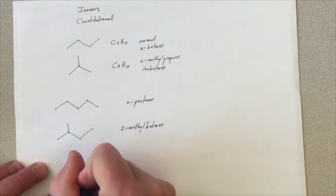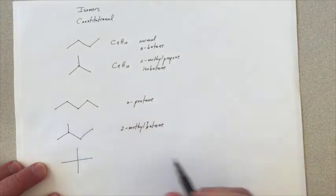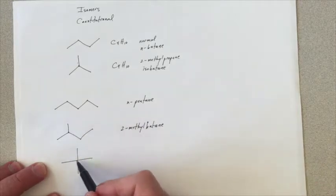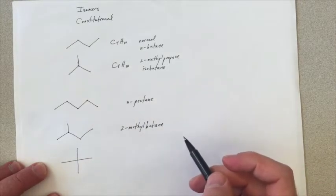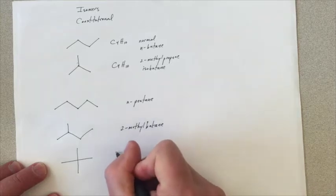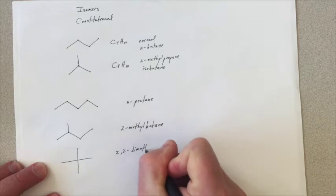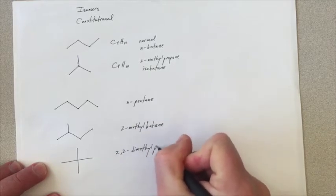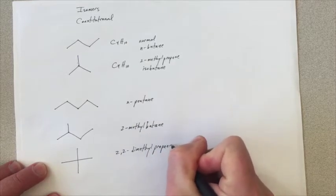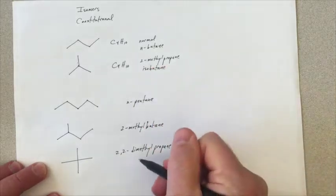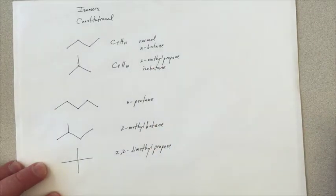Well, let's branch it even more. We have one, two, three, four, five carbons. This would be a 2,2-dimethyl propane. These are the three constitutional isomers of pentane.